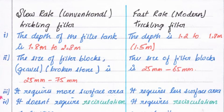In the slow rate trickling filter, the depth of the filter tank should be 1.8 meters to 2.8 meters. In the fast rate trickling filter, the depth is 1.2 to 1.8 meters, with a mean depth of 1.5 meters.